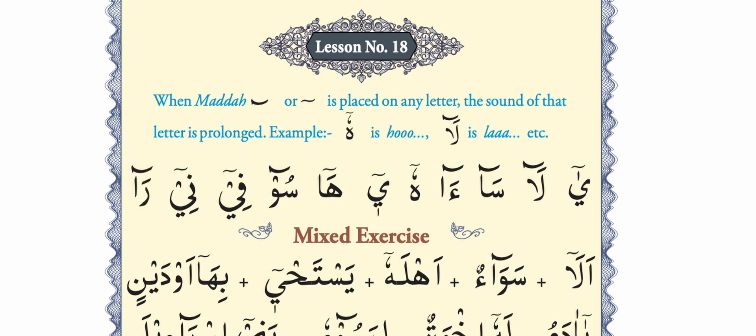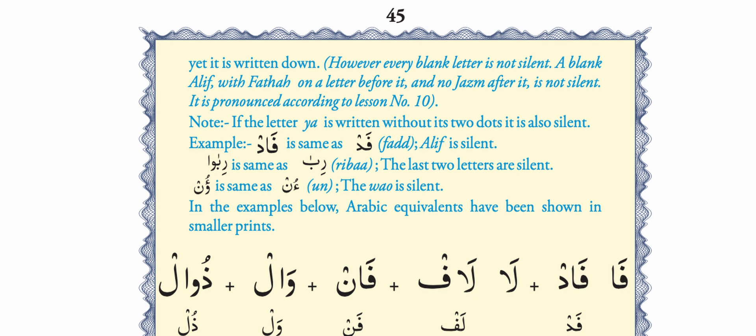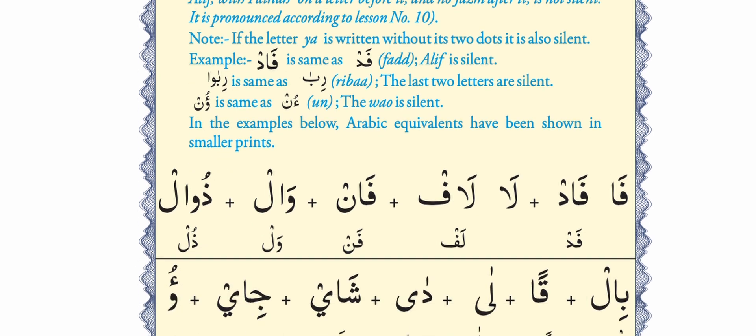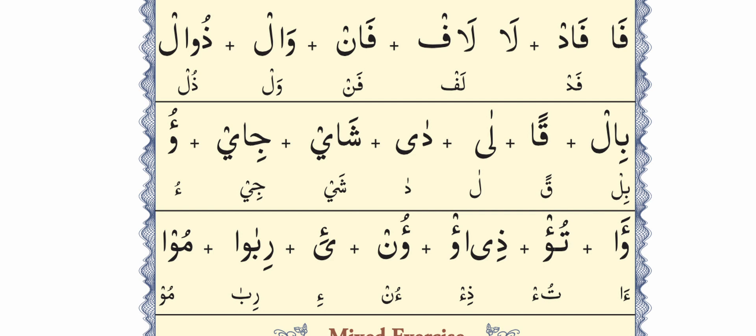This is how we prolong letters where we see small madda or big madda. Lesson number 19 is about blank letters. This lesson teaches us that blank letters — those without any sign — are skipped and not read. When we have jazm after blank letters: if you see 'fa fatha and alif' with no jazm after it, it will be prolonged according to the rule. But when there is a jazm after it on any letter, then alif is blank and will not be read at all — so 'faa' becomes 'fa'.